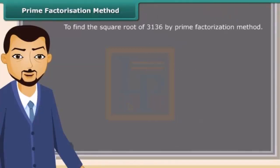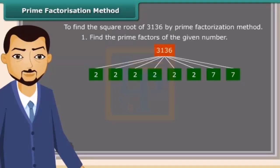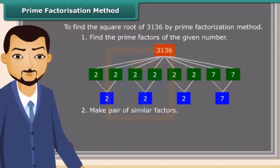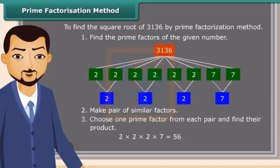Now we will try to find the square root of a number by prime factorization method by following some steps. First of all, find the prime factors of the given number. Now make pair of similar factors. After that, choose one prime factor from each pair and find their product. So the product thus obtained is the square root of the given number.